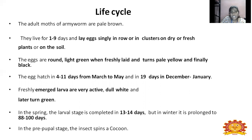The freshly emerged larvae are very active and dull white in color. As they develop through molting, they turn green. They immediately start feeding after emerging from the egg. In spring season, the larval stage is completed in 13 to 14 days, but in winter it is prolonged to 88 to 100 days — a very vast difference based on season. There are 6 larval stages.